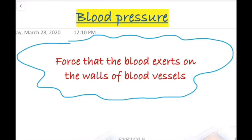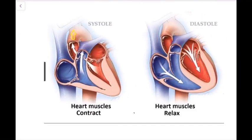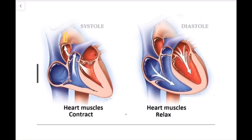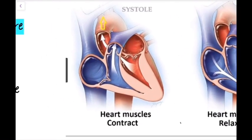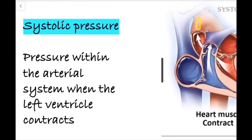To understand these two components, you need to know about the cardiac cycle. There are mainly two phases: one is systole and the other one is diastole. During systole, the ventricles contract and blood is pushed into the aorta. Because of this ventricular contraction, the blood pressure is usually high during systole.